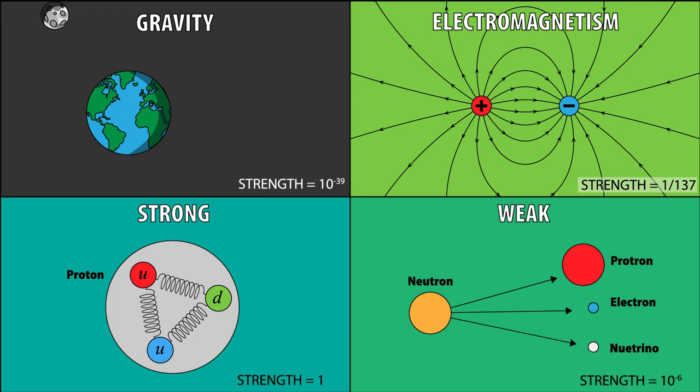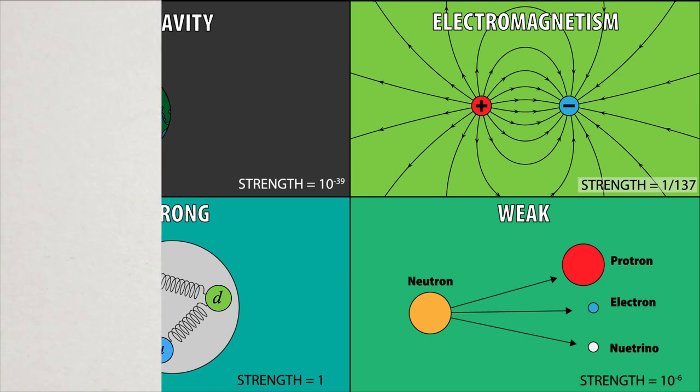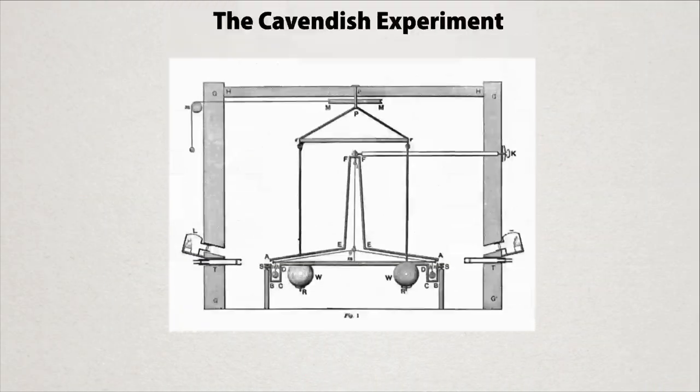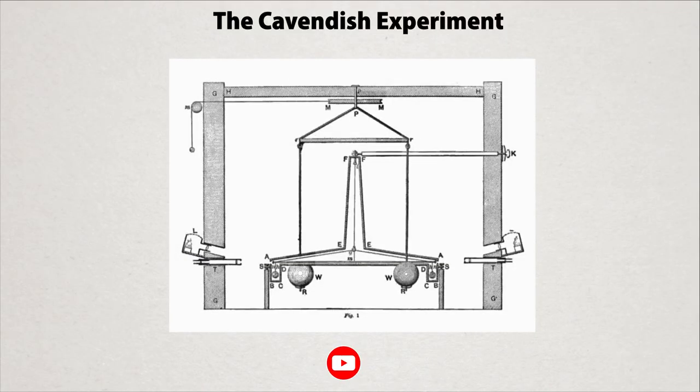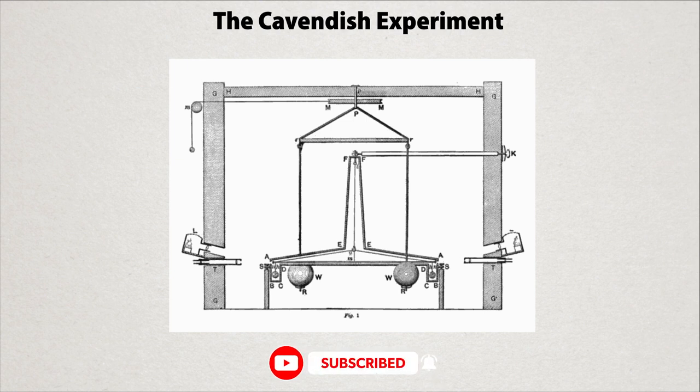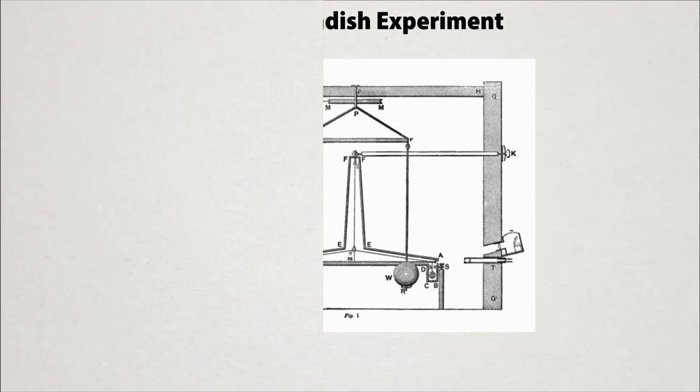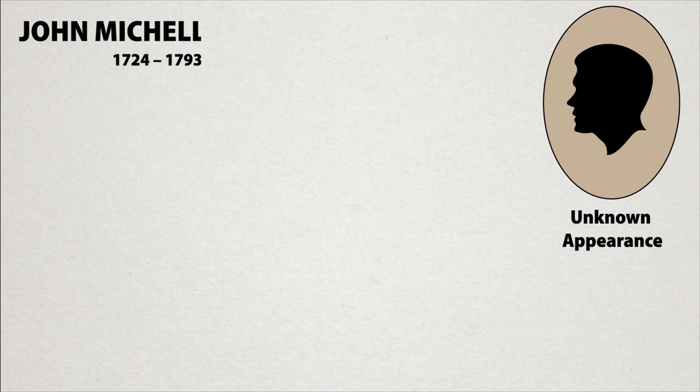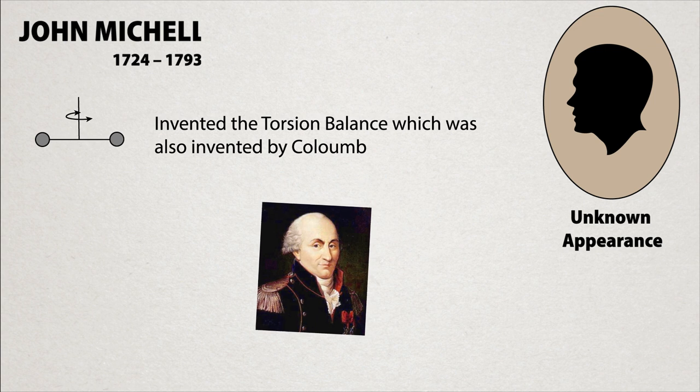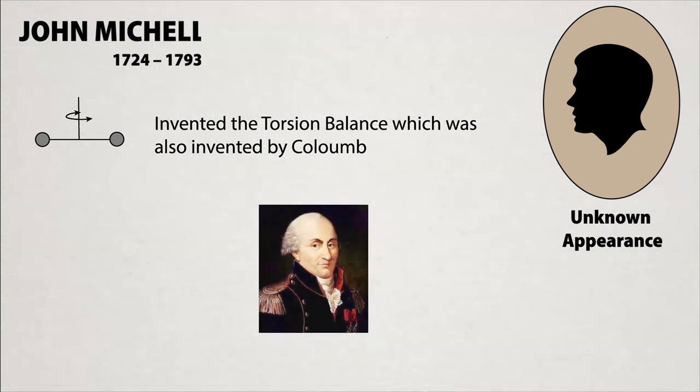But before we get into the latest results, let's discuss the original results, the so-called Cavendish experiment. The first thing that you should know about the Cavendish experiment is that it wasn't invented nor designed by Cavendish. It was designed and originally built by a relatively unknown scientist, John Mitchell. He has a rather large list of accomplishments beyond the invention of the torsion balance, which was also independently invented by Charles Augustin de Coulomb.